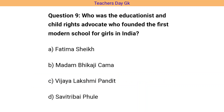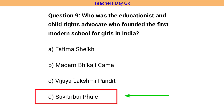Question number 9. Who was the educationist and child rights advocate who founded the first modern school for girls in India? The correct answer is option D, that is Savitribai Phule.